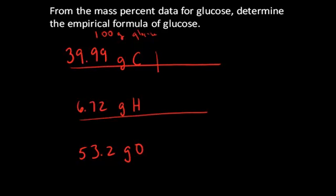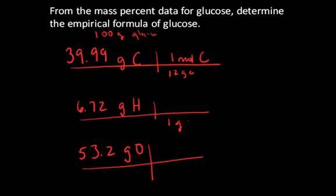To determine the empirical formula, I need to figure out the number of moles of each of these elements in that 100 gram sample. I do this by multiplying by the inverse of the molar mass for each element. For carbon, it's 12 grams carbon per 1 mole of carbon. For hydrogen, it's 1 gram hydrogen per 1 mole of hydrogen. And for oxygen, it's 16 grams oxygen per 1 mole of oxygen from the periodic table.